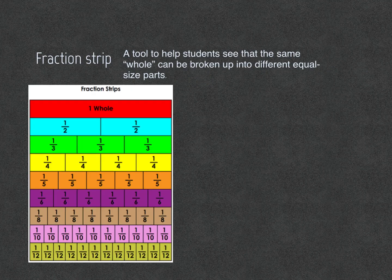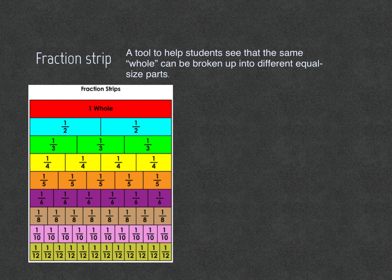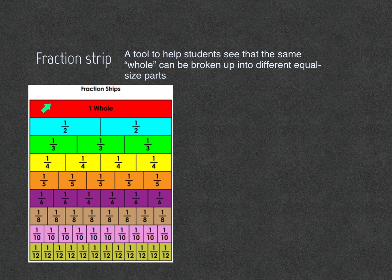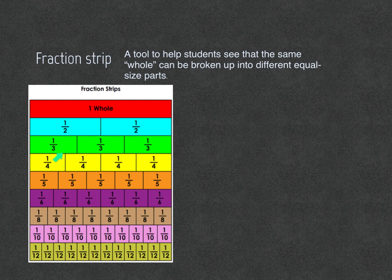Fraction strip: A fraction strip is a tool to help students see that the same whole can be broken up into different equal size parts. For example, one whole is equivalent or the same as one half and one half and as one third and one third and one third and so on with all of these numbers.